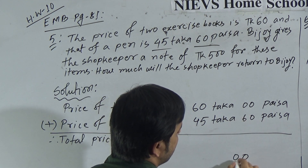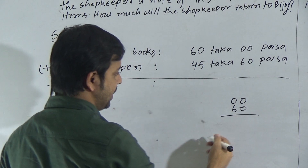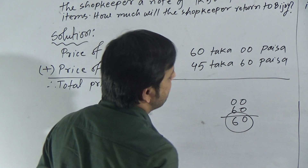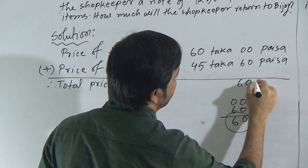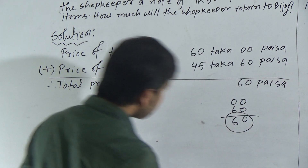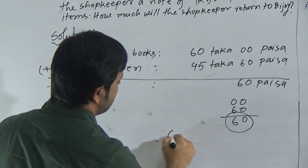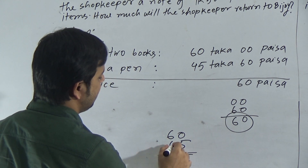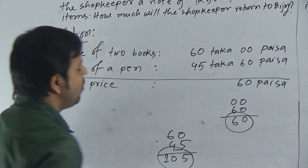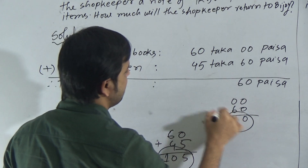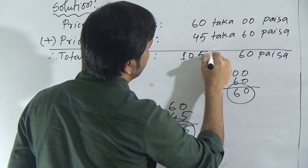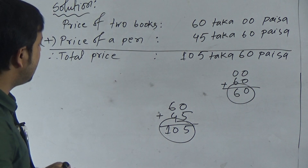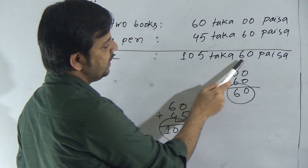We have to add 00 paisa and 60 paisa. Adding: 0 and 0 is 0, 6 and 0 is 6 — so 60 paisa. This is less than 100, so we write 60 paisa directly. Now add 60 taka and 45 taka: 5 and 0 is 5, and 4 and 6 is 10 — that means 105 taka. So the total price of two exercise books and a pen is 105 taka 60 paisa.